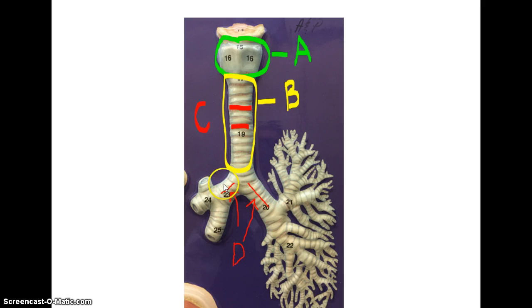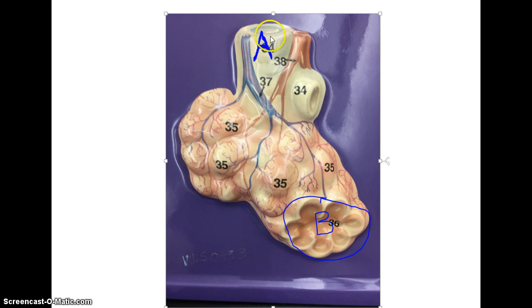Just a reminder, the right lung has three lobes, the left lung has two lobes. Then you get down to the bronchial and down to the alveoli, where diffusion is going to take place.